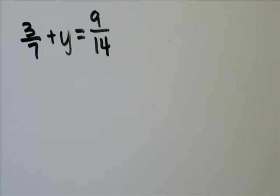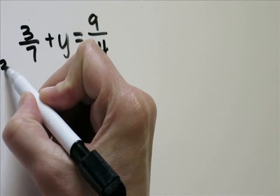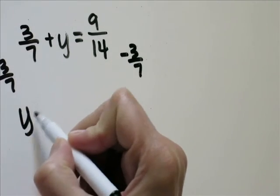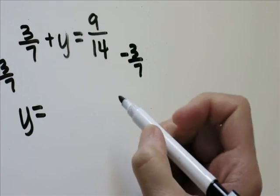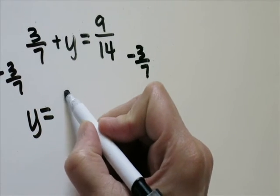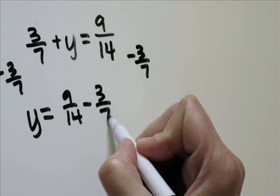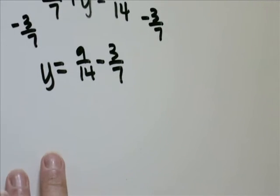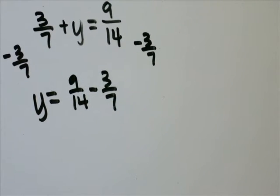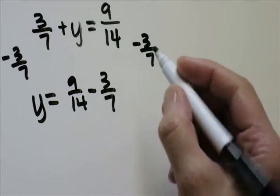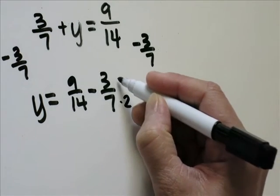Problem 24, 3 over 7 plus y equals 9 over 14. Minus 3 over 7 from each side. That would give us y on its own. So y equals 9 over 14 minus 3 over 7. Since we're dealing with subtracting fractions, we're going to need a common denominator, which 7 will go into 14 because 7 times 2 is 14.